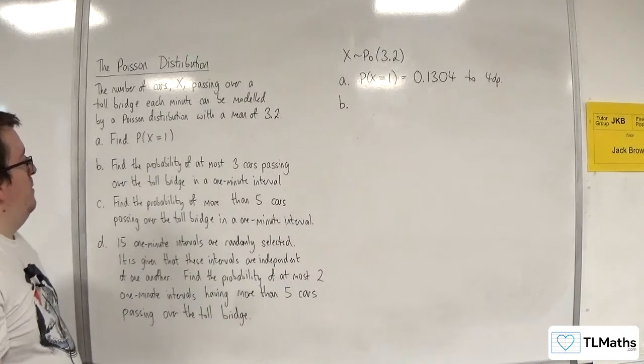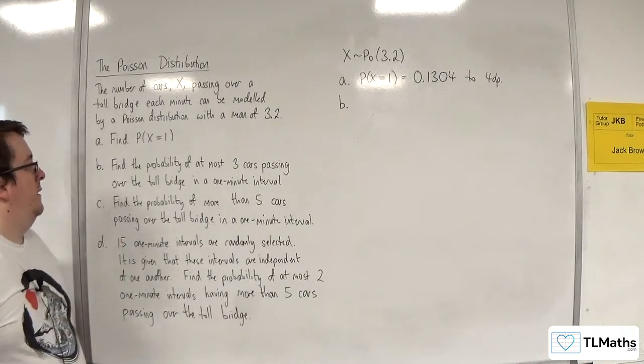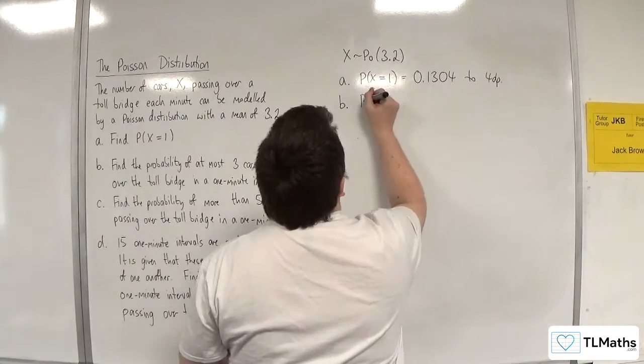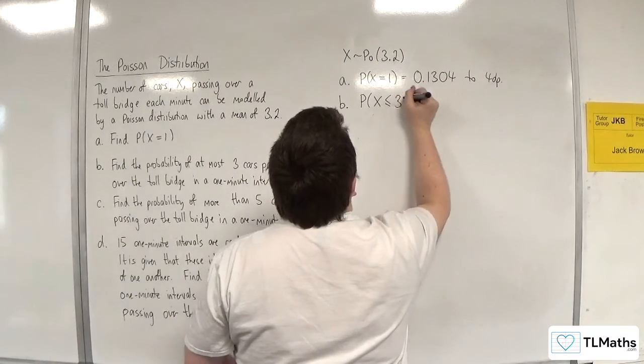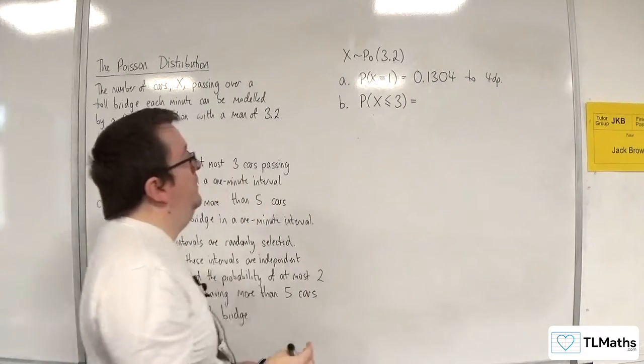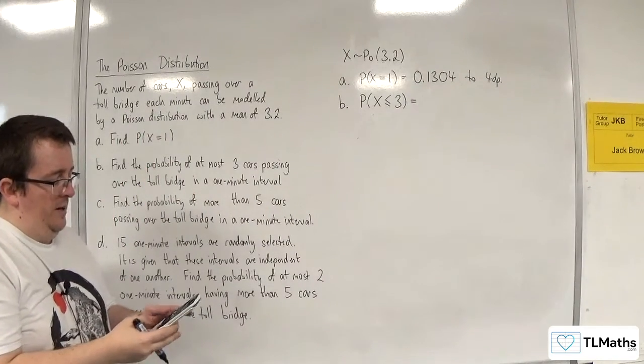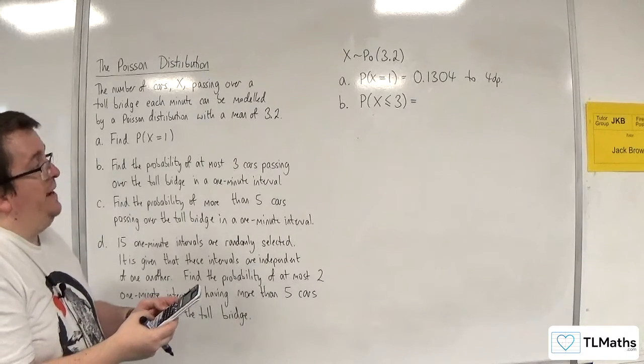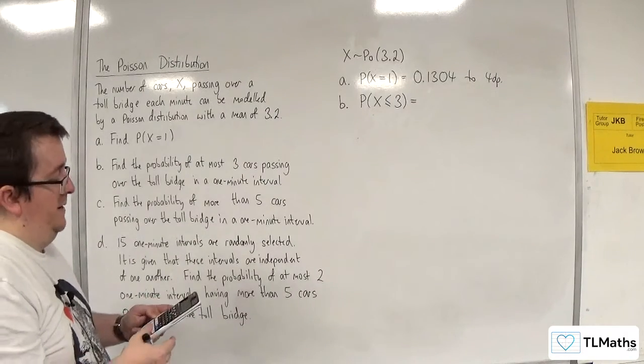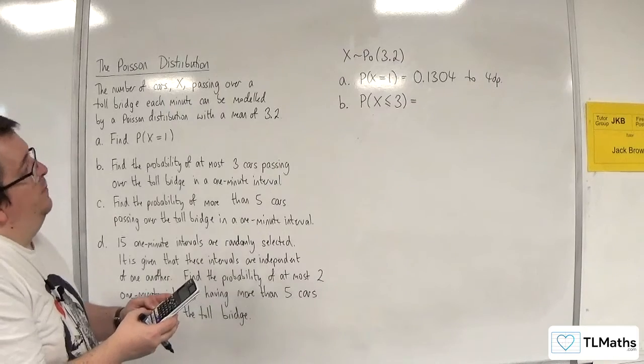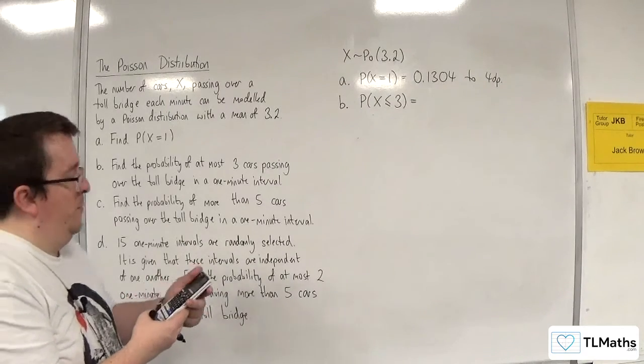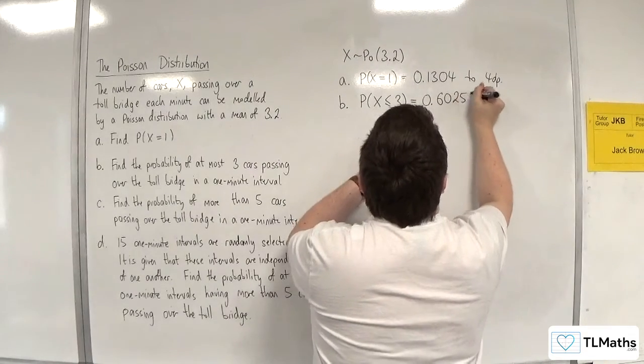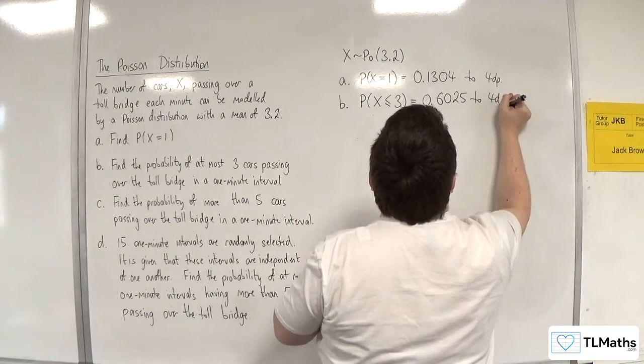Part B: find the probability of at most 3 cars passing over the toll bridge in a 1 minute period. So at most 3 would be the probability of x being less than or equal to 3. So I now need to go to menu, number 7, and then go to Poisson CD. Go to variable, put the x value in as 3 and lambda as 3.2. We should get 0.6025 to 4 decimal places.